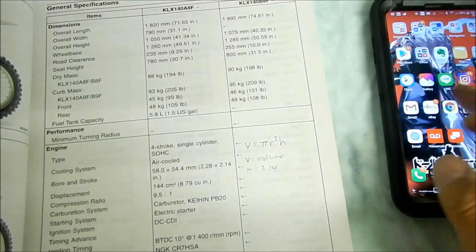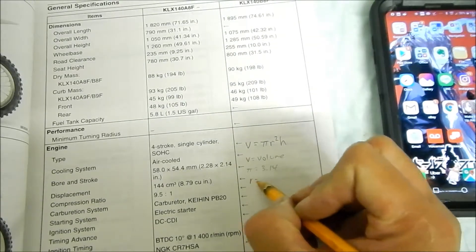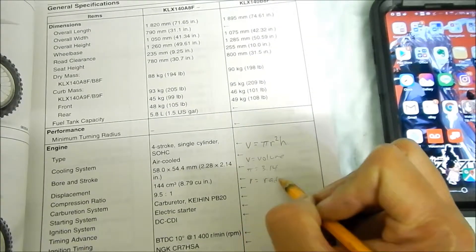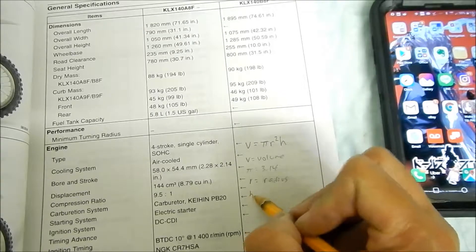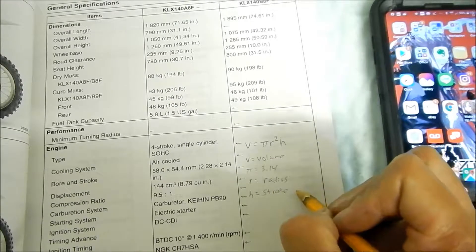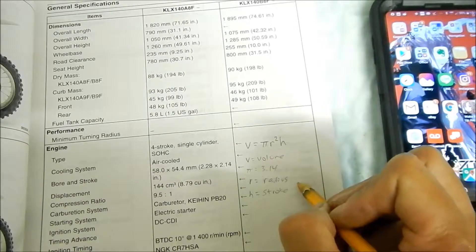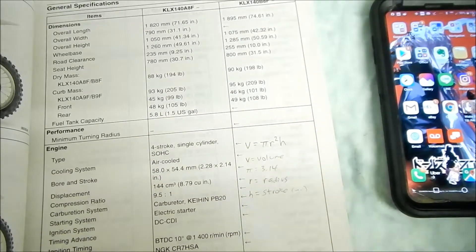R equals your radius, and h equals your stroke. We're going to be using metric units, so this will be millimeters, is what we're going to be working.